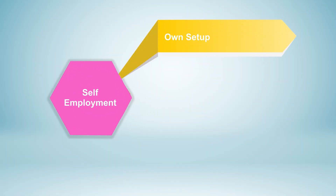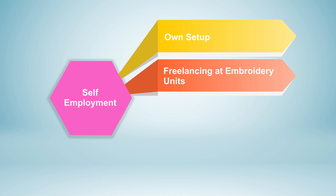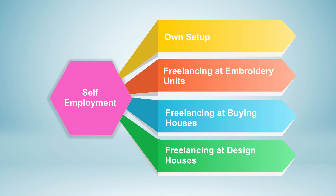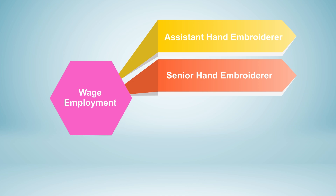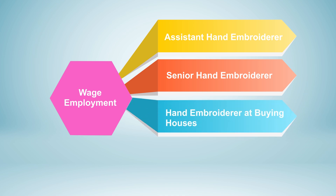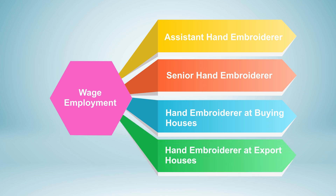If you develop all the competencies, you may get employed in various apparel, made-ups and home furnishing firms and organizations. Job opportunities after completing the course include self-employment such as own setup, freelancing at embroidery units, buying houses, and design houses. Wage employment options include assistant hand embroiderer, senior hand embroiderer at embroidery units, hand embroiderer in buying houses, export houses, design houses covering apparel and home furnishing, and trainer at NGOs.